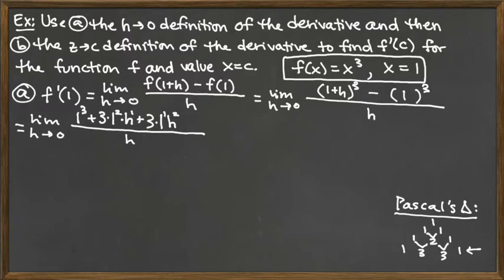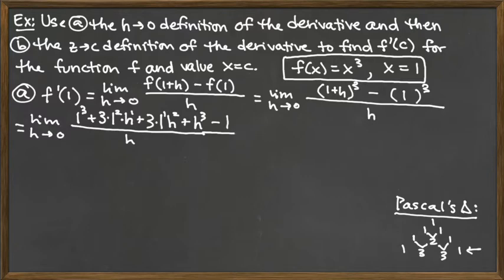Lastly, we have the Pascal's Triangle coefficient of 1. We've run out of powers for 1 — you could think of it as 1 to the 0 power, which is still just 1. We finish by having that second term raised to the third power. So that's what we get when we cube out 1 plus h. Then we subtract the 1 cubed, which is simply 1. Be careful with distributing if that ends up being multiple terms.